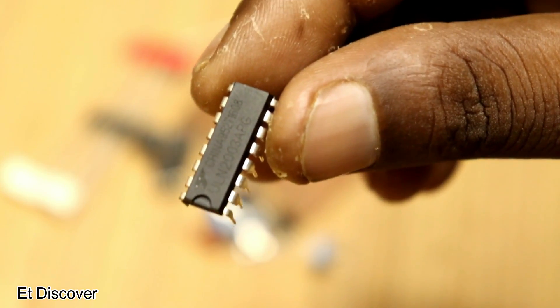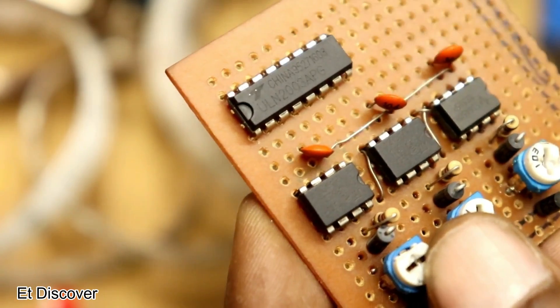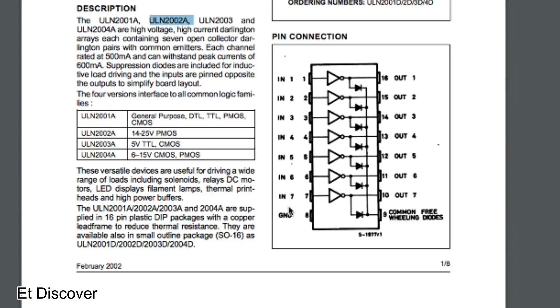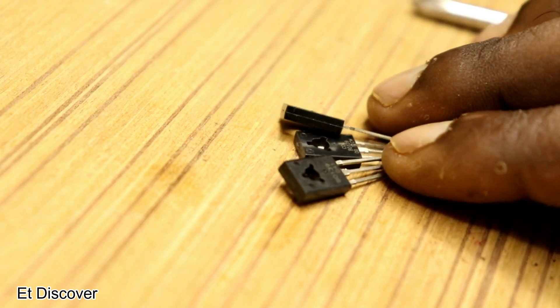For this purpose, I will use a ULN 2003 Darlington driver IC. This IC has 7 inputs and 7 outputs. If you don't want to use this IC, you can use only 3 transistors for 3 colors.